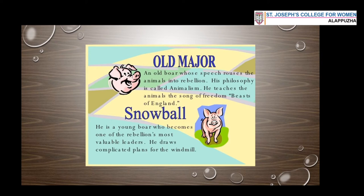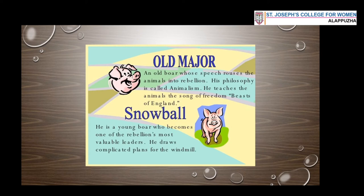Moving on to the major characters. The first major character is Old Major. The action of the novel begins when Old Major, the oldest pig of the farm, calls all the animals for a secret meeting. In this meeting, he tells them of a dream he had — a dream of revolution — and exhorts all the animals to revolt against the tyranny of Mr. Jones. He is described as an old boar whose speech rouses the animals into rebellion. His philosophy is called Animalism, and he teaches the animals the song of freedom — 'Beasts of England' — which becomes the national anthem of the animals at Manor Farm, which will eventually become Animal Farm.